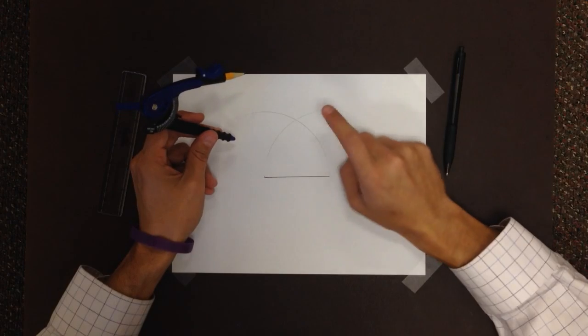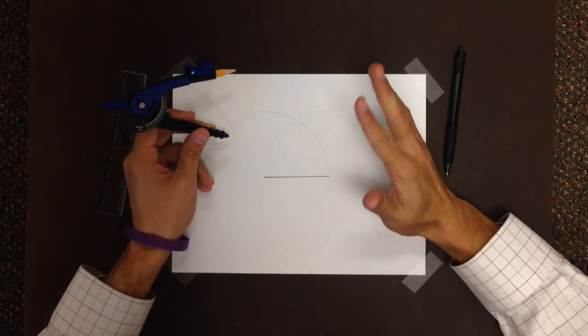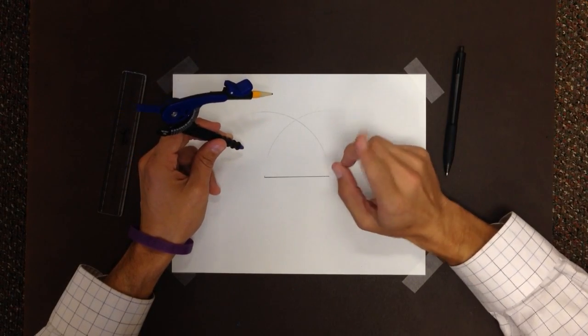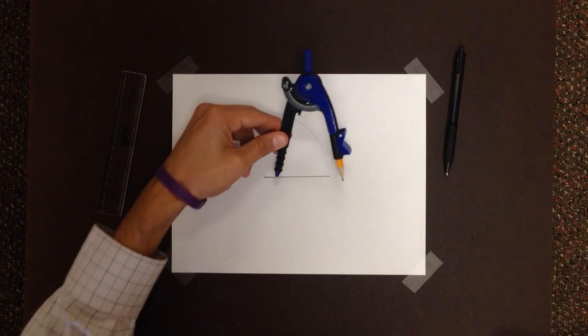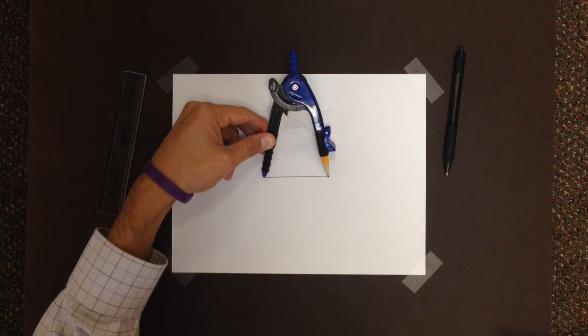Now what that has done is it has created an intersection point up here. Now if we know our perpendicular bisector techniques, this is pretty much half of that. What we know is that this distance, our compass doesn't move, so that's solid. That's going to be the side length of our equilateral triangle.